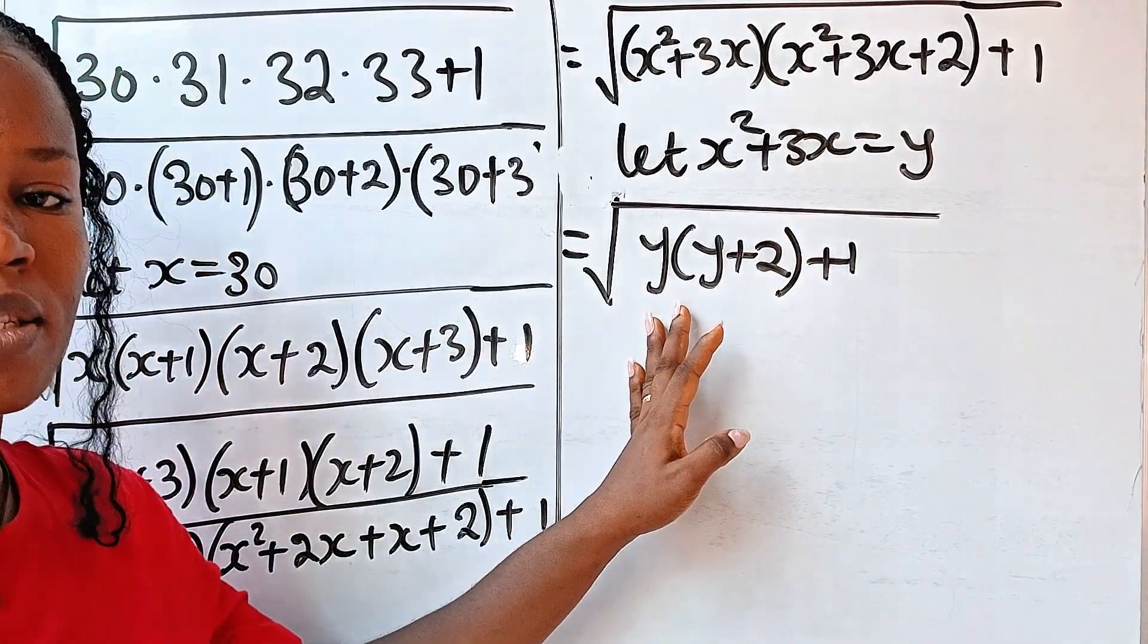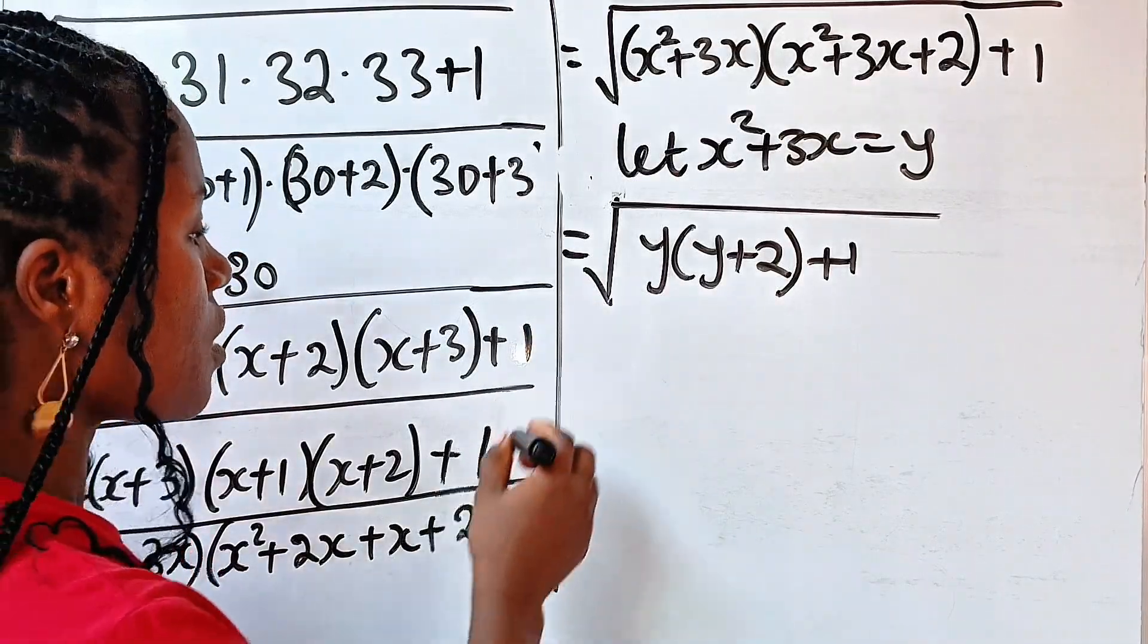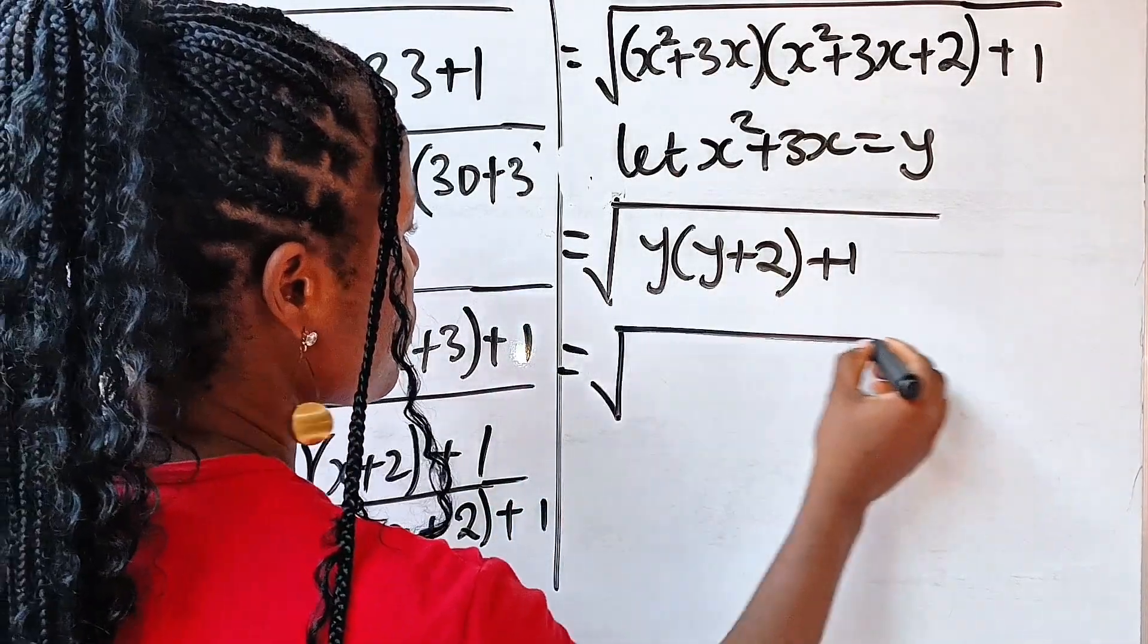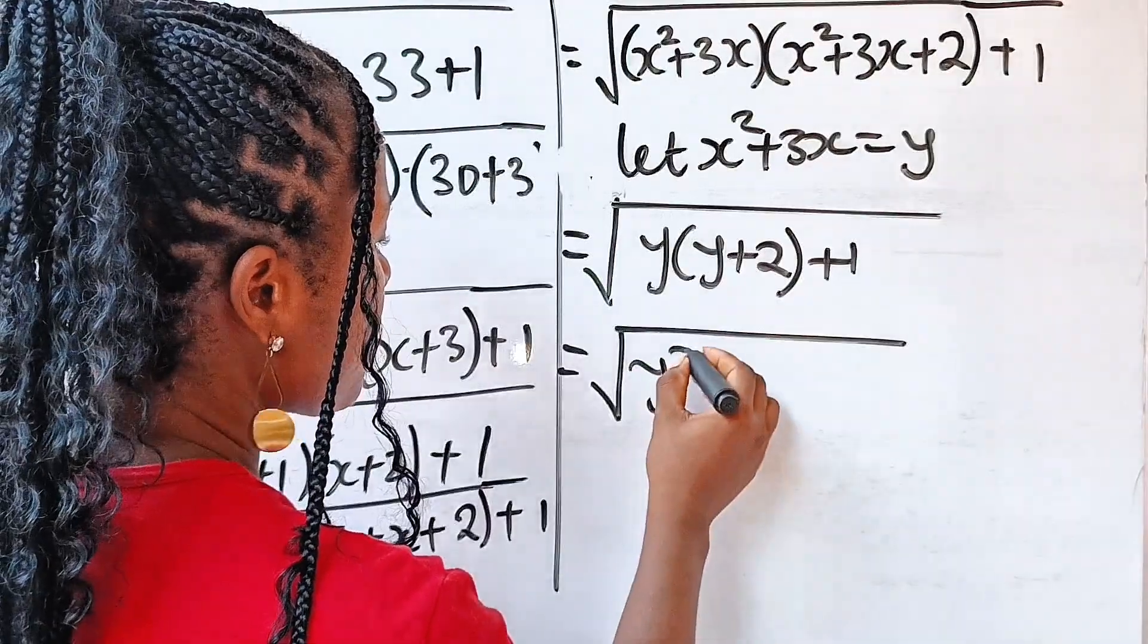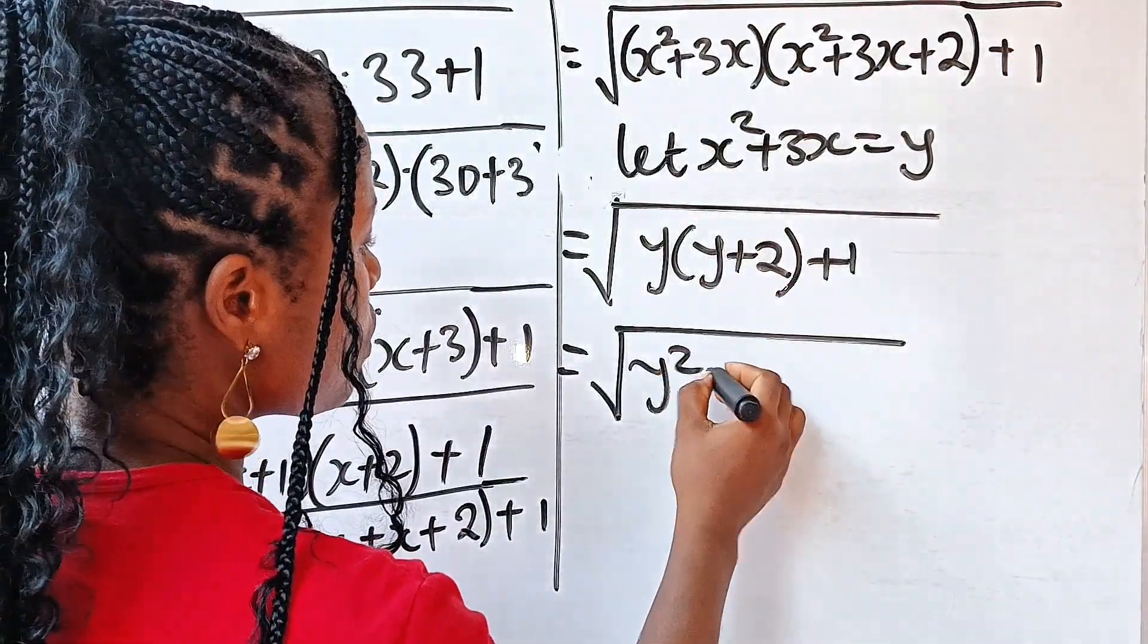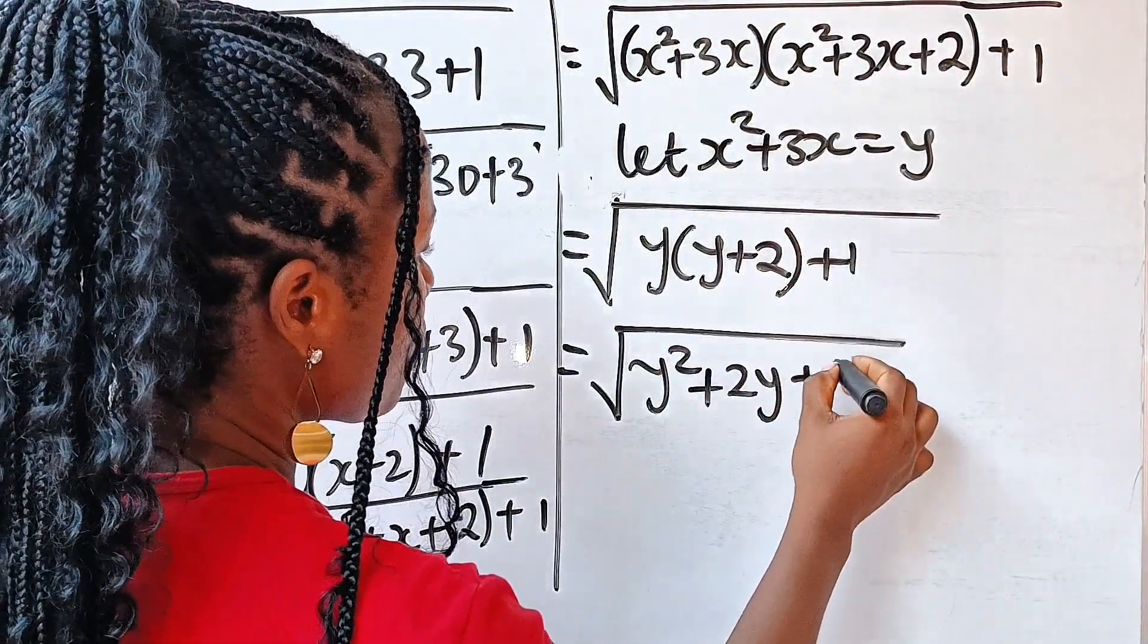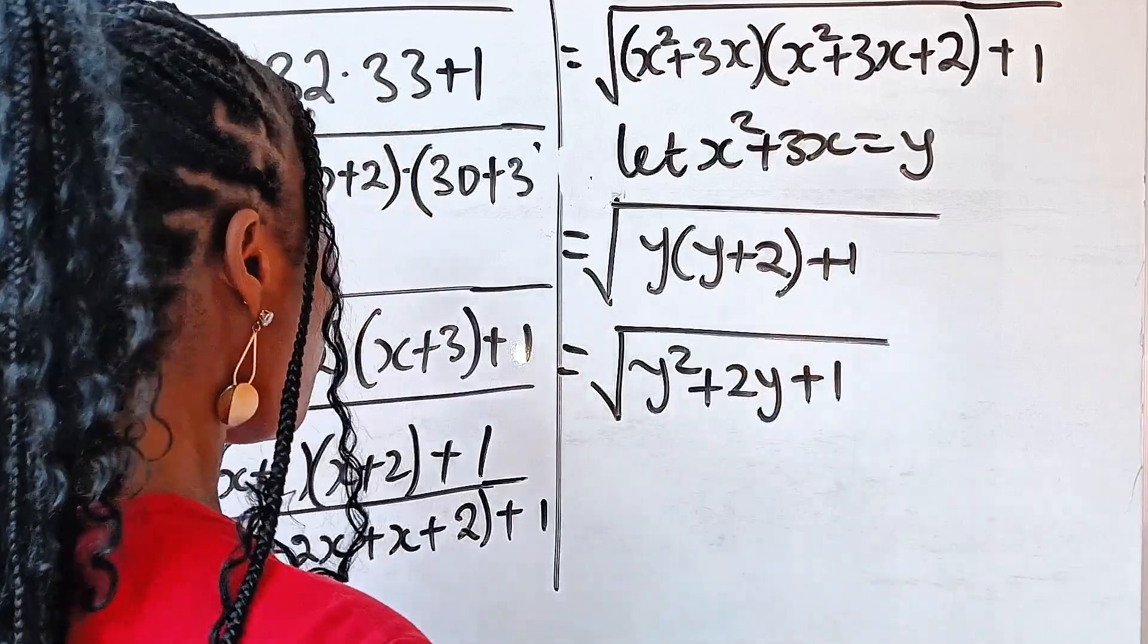Now, it's time for us to expand the brackets. Yes, so we have this to be square root of y times y is y squared, y times plus 2 is plus 2y, then plus 1.